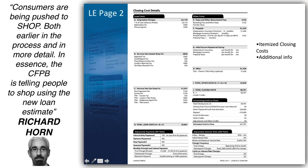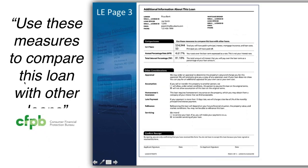That brings up another point — the CFPB is telling people to shop. Naturally, if you've got good relationships with your borrowers, many will never shop you because you've already delivered a quality presentation and been their mortgage advisor. But they're going to get loan estimates that say 'you can shop for these services,' which might trigger some ideas. So in order to get ahead of the game, make sure somebody else isn't explaining TIP and cost over five years to them first.